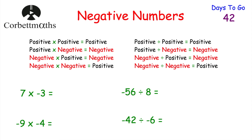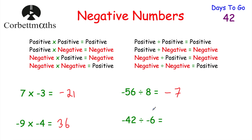Here are some multiplication and division questions to try. 7 times negative 3: positive times negative gives a negative, and 7×3=21, so the answer is negative 21. Negative 9 times negative 4: negative times negative is positive, and 9×4=36, so the answer is 36. Negative 56 divided by 8: negative divided by positive is negative, and 56÷8=7, so the answer is negative 7. Negative 42 divided by negative 6: negative divided by negative is positive, and 42÷6=7, so the answer is 7.